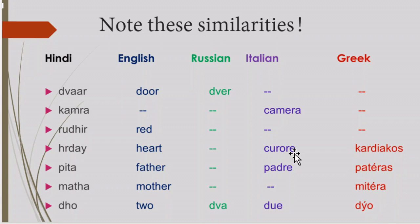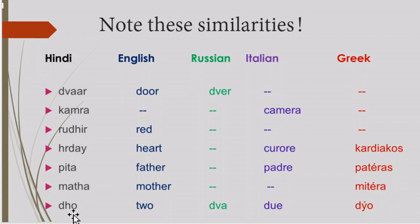Greek has the word 'kardiakos.' In Hindi we have 'Pita,' and in English there is 'father.' In Italian we have 'padre,' and in Greek, 'pateras' — all meaning father. In Hindi, 'mata' is mother, similar to 'mother.' In Greek, 'mitera.' In Hindi 'do,' English 'two,' Russian 'dva,' Italian 'due,' and Greek 'dio.'